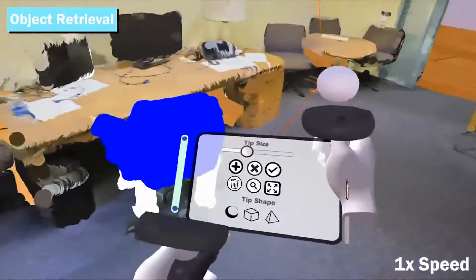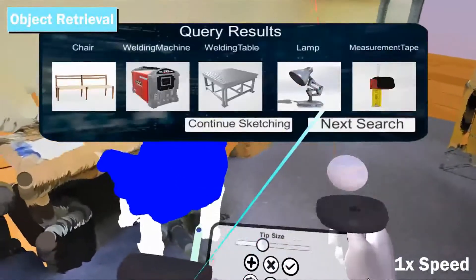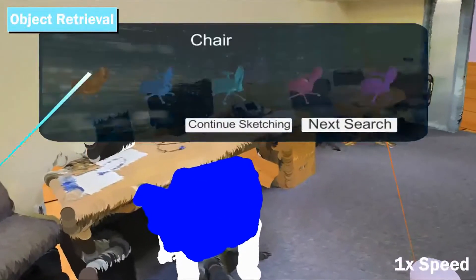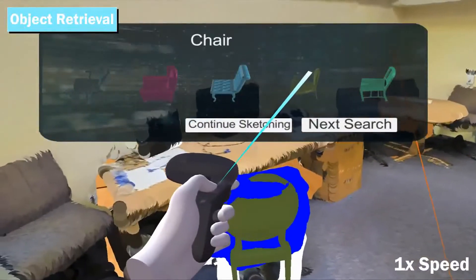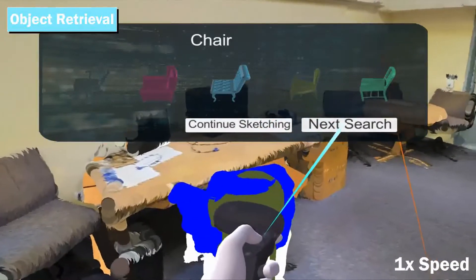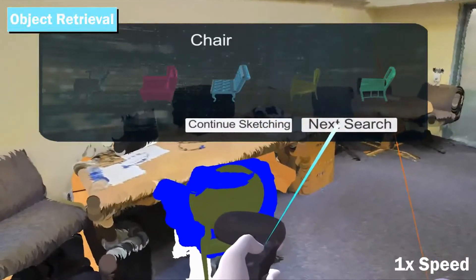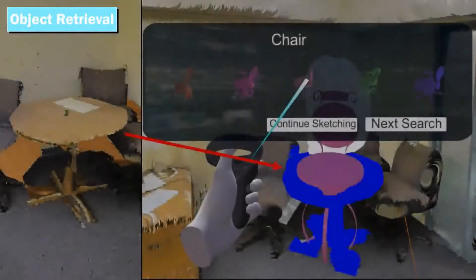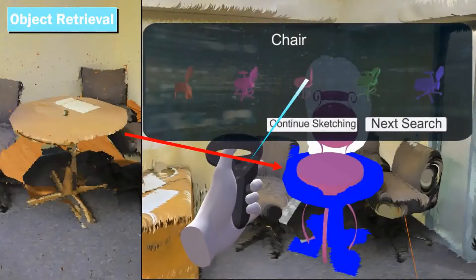Users can modify the point cloud by selecting, deleting, or adding points with the brush tool in an iterative fashion until they get the desired output. Users can also repurpose their sketches or point cloud selections to get desirable results.